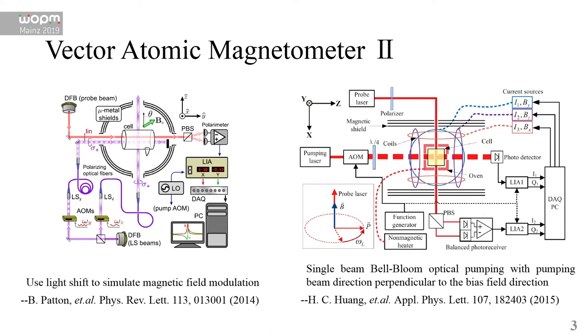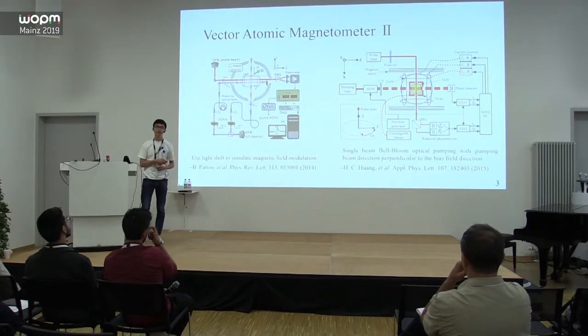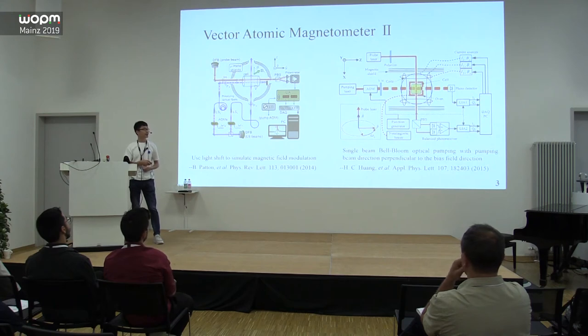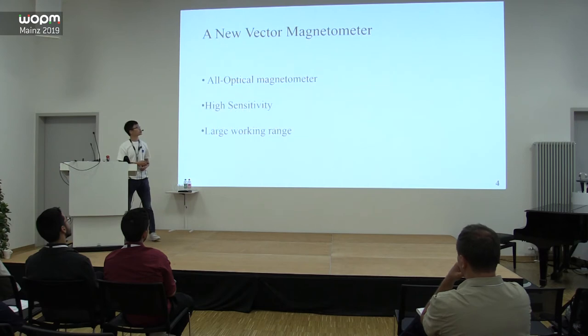The fourth work uses a single beam Bell-Bloom optical pumping with pump beam direction perpendicular to the bias field direction. This means we need to know the bias field direction roughly at first. So what we want to do is to realize a new vector magnetometer.